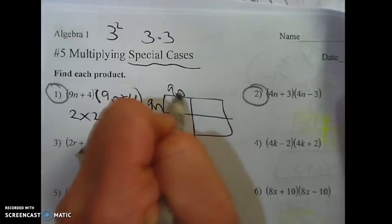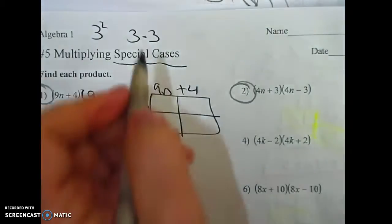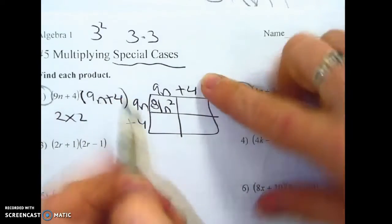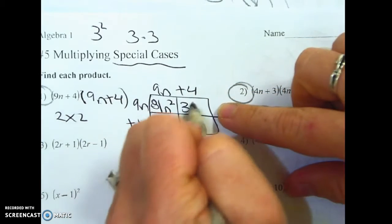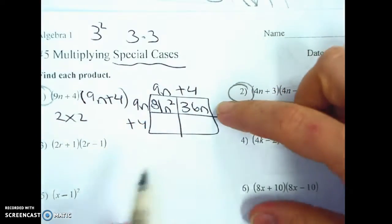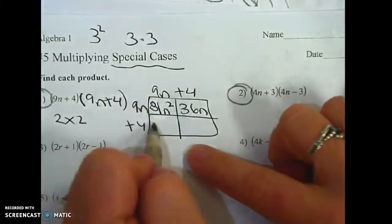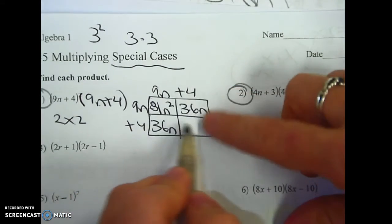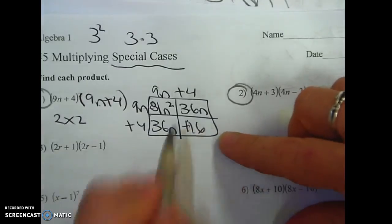So what makes this one special is that it was squared. You write it twice. 9n times 9n, 81n squared. 9n plus 4, 36n. What you also notice is special about this is that the middles will be exactly the same. And then 4 times 4 is positive 16.